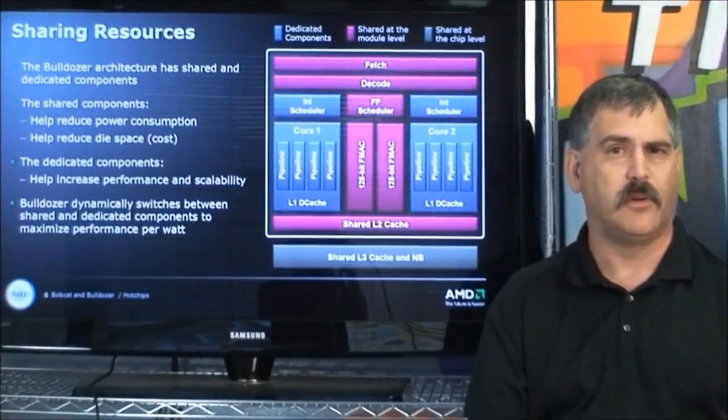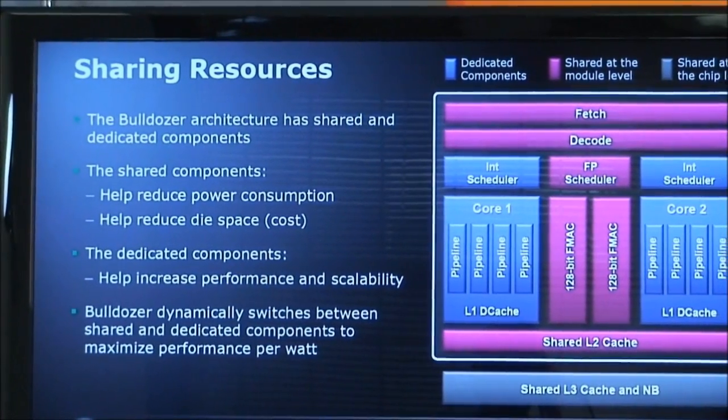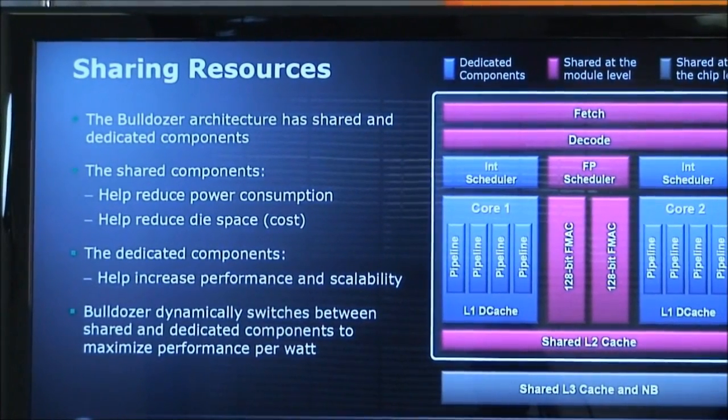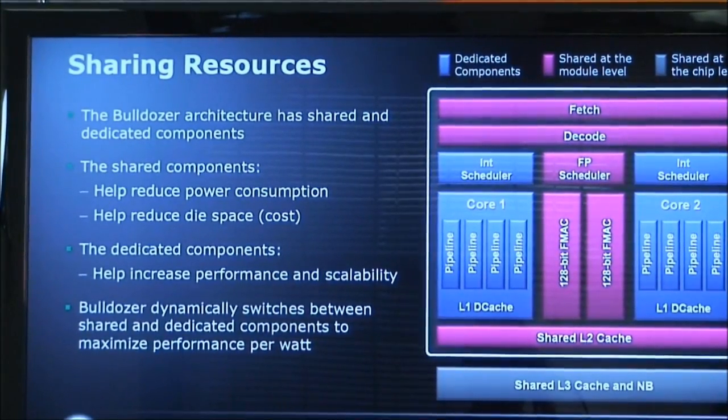If you have a single-threaded application, you would have one of the cores acting on that. But say for instance you wanted to put more resources on that core, you would take the other part of the core and add it to the original one, thus increasing the throughput performance on the original core.